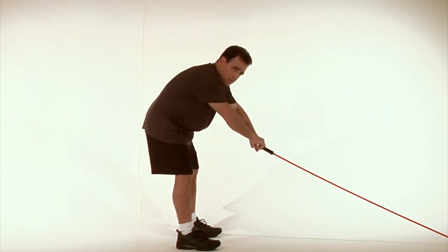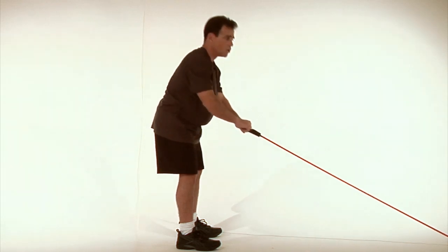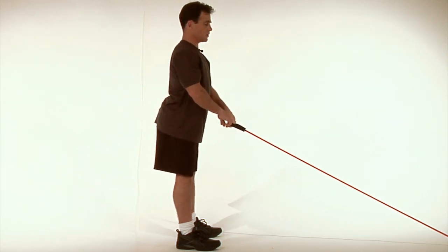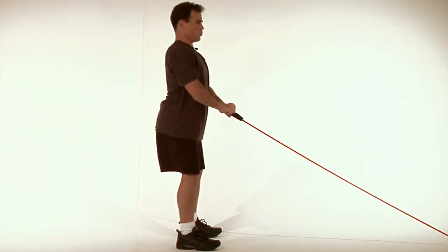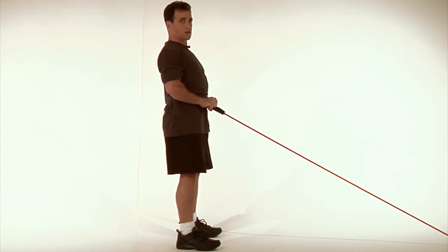Watch that you don't round through your back as you reach forward or that you don't lock your knees out. Soft bend to the knees, back stays flat and strong, and then pull in as you rise up back to the starting position.